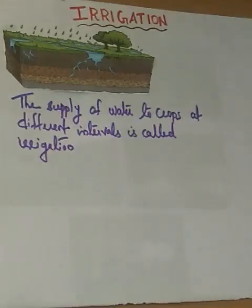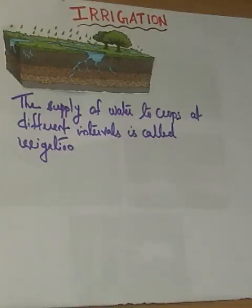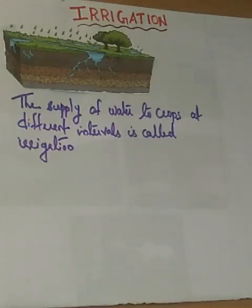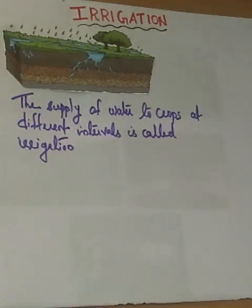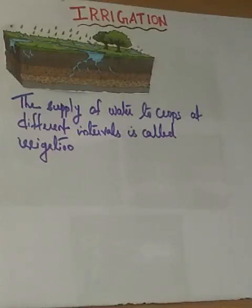Next we discuss why water is very important for plants. We all know that all living beings need water to live. Without water we cannot live. Water is very important for plants because it helps in the proper growth and development of flowers, fruits and seeds. Water is also essential for the germination of seeds — without water, seeds won't germinate in dry conditions. When we water the seeds, they germinate.